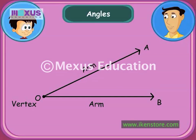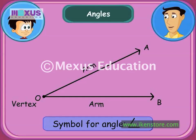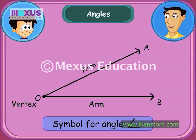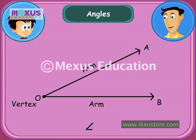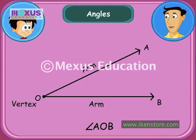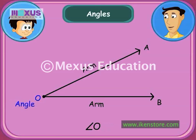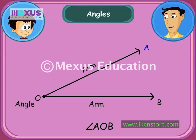Now, look here. This is the symbol for an angle. We generally name an angle by three capital letters. The letter at the vertex always comes in between the other two letters. So we can name this as angle AOB. Sometimes an angle is named by its vertex letter — that is, angle O — or even by small letters like a and b, or natural numbers like 1 and 2.